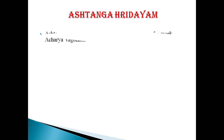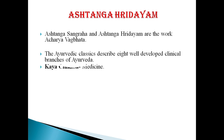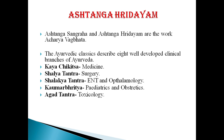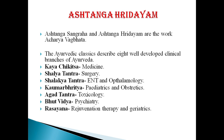Next is Ashtangahridaya. Ashtangahridaya and Ashtanga Sangraha are the works of Acharya Vagbata. These Ayurvedic classics describe eight well-developed clinical branches of Ayurveda, also called Ashtanga Ayurveda. These are: Kayachikitsa — mainly medicine; Shalya Tantra — mainly surgery; Shalakya Tantra — mainly ENT and ophthalmology; Kaumara Bhritya — mainly pediatrics and obstetrics; Agada Tantra — mainly toxicology; Bhuta Vidya — mainly psychiatry; Rasayana — rejuvenation therapy and geriatrics; and Vajikarana — aphrodisiacs.